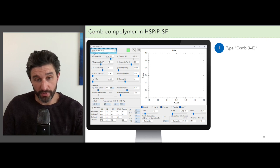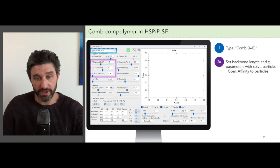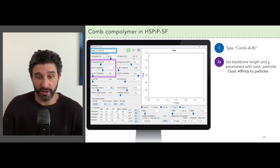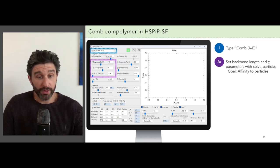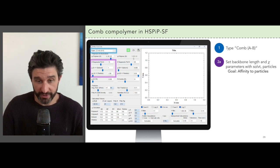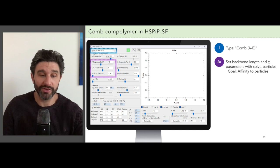Next, we choose the backbone chain length and the chi parameters for how it interacts with the solvent and particles. Of course, the goal is for the backbone to have an affinity for the particle surfaces, and so we set the polymer particle chi parameter to be negative, meaning an attractive interaction.